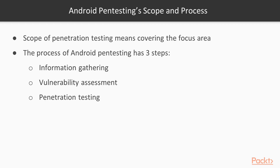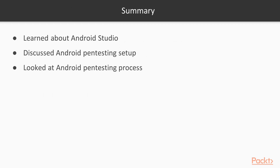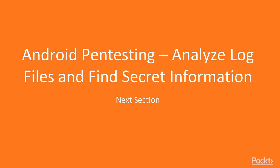These three steps are really important inside the penetration testing scope and process. For the section summary: we learned about Android Studio — how to download and install it — then about Android pen testing setup, and then the process of Android pen testing. In the next section we are going to learn about Android pen testing, how to analyze log files and find secret information. Thank you so much for your time.